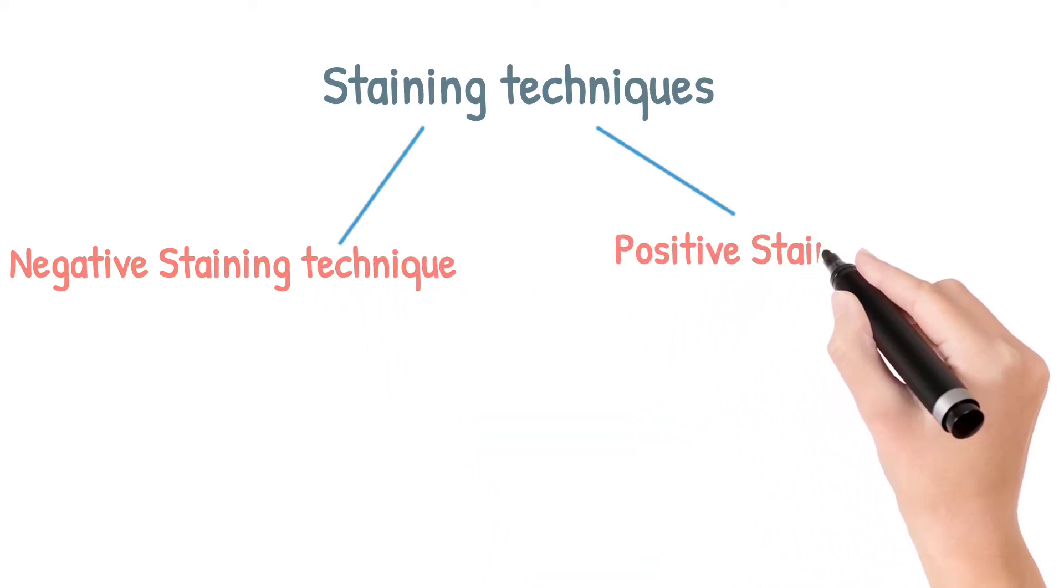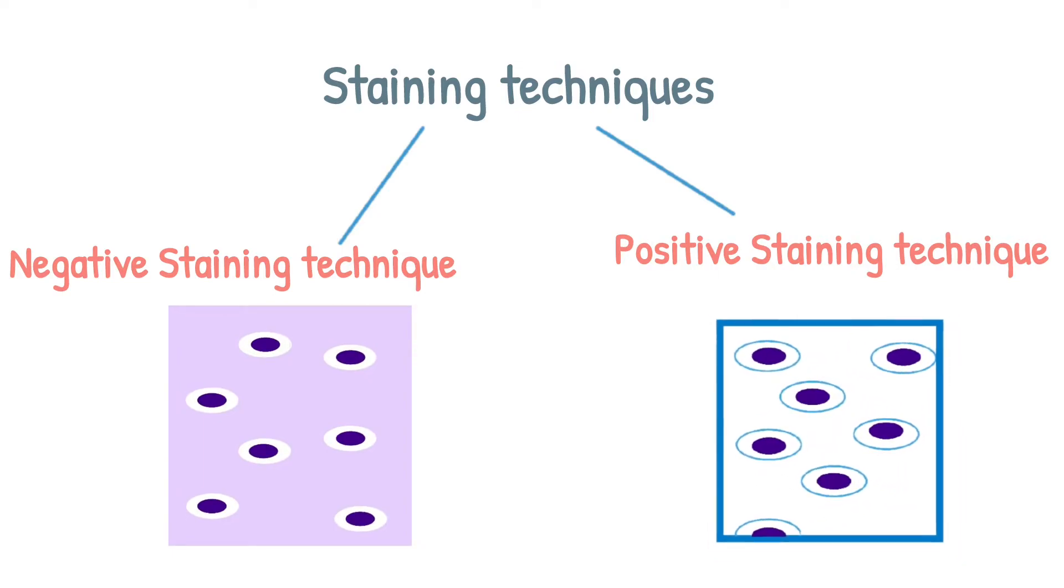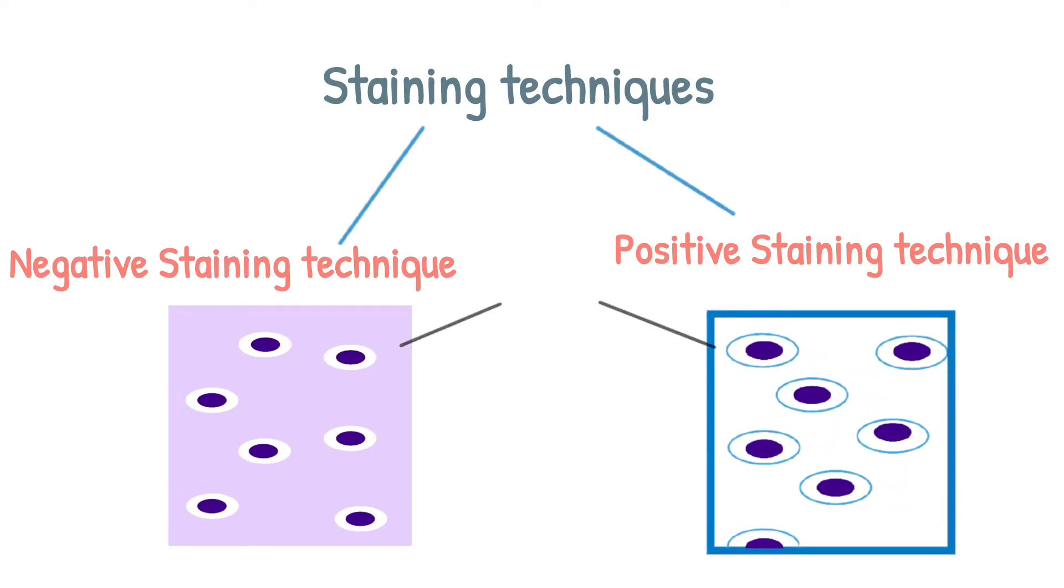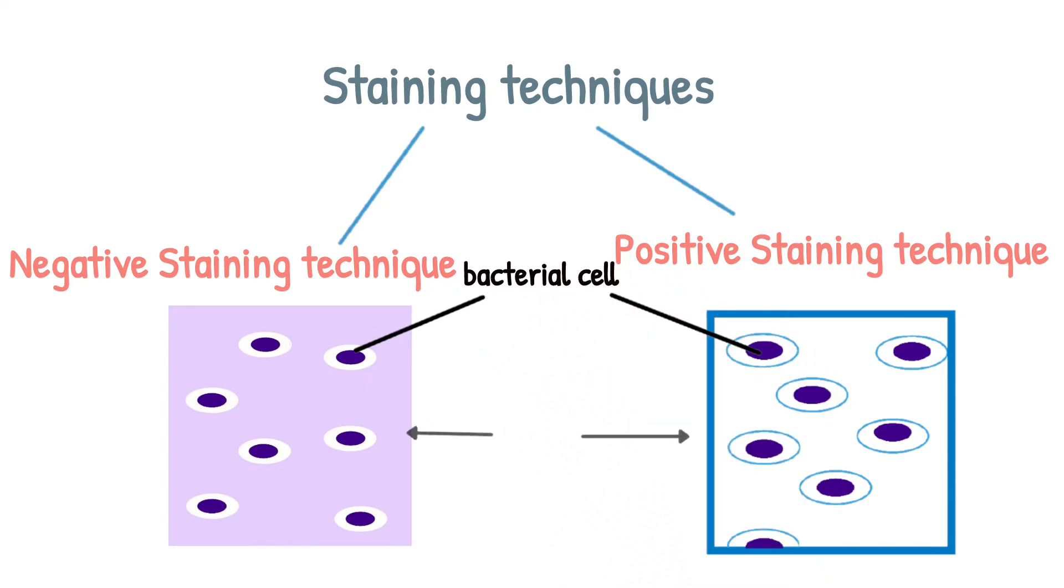There are two ways by which capsule staining can be obtained. First is negative staining technique, and second is positive staining technique. In negative staining, the background and bacterial cell are stained, but the capsule is not. In positive staining, the background is not stained, but the bacterial cell and capsule are stained.